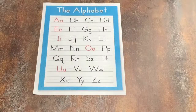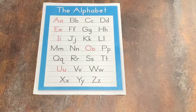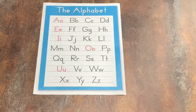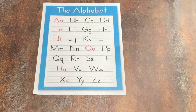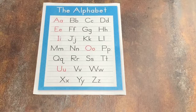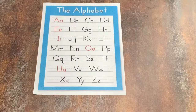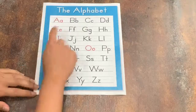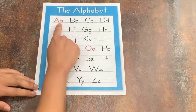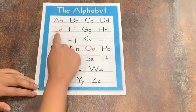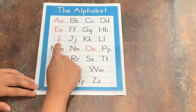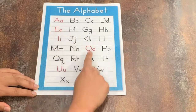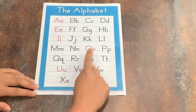Hay veintiséis letras en el alfabeto. Cinco vocales y veintiuno consonantes. There are twenty-six letters in the alphabet, five vowels and twenty-one consonants. Las vocales son A, E, I, O, U.